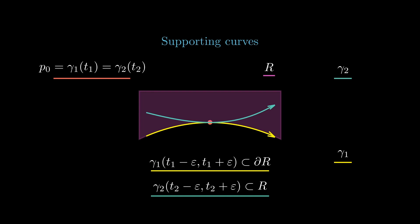If the curves are co-oriented and the portion of gamma1 goes counterclockwise around r, just like in the picture, we say that gamma1 locally supports gamma2 from the right. Similarly, if they are co-oriented and the portion of gamma1 goes clockwise around r, we say that gamma1 locally supports gamma2 from the left.